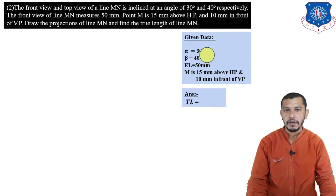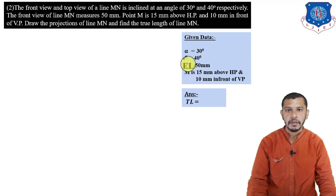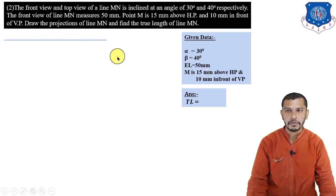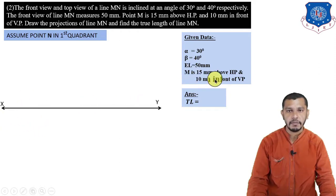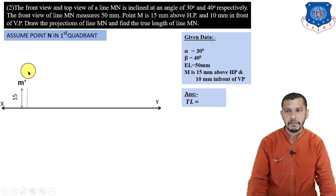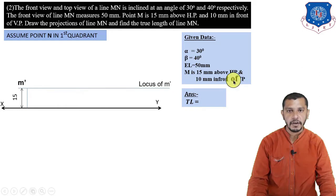The quadrant of point N is not given, so we assume the quadrant of N. Since M is in the first quadrant, we assume point N in the first quadrant also — so N will be above HP and in front of VP. Draw the XY reference line, then mark the elevation and plan of point M: 15mm above HP means 15mm above XY gives M-dash; draw locus of M-dash. 10mm in front of VP means 10mm below XY gives the plan of point M; draw locus of M.